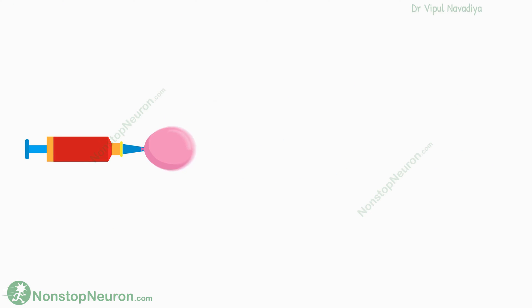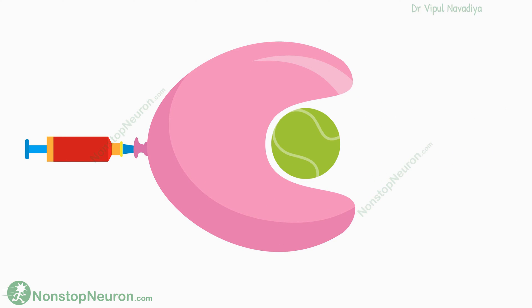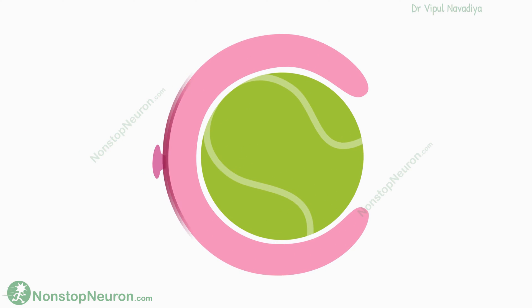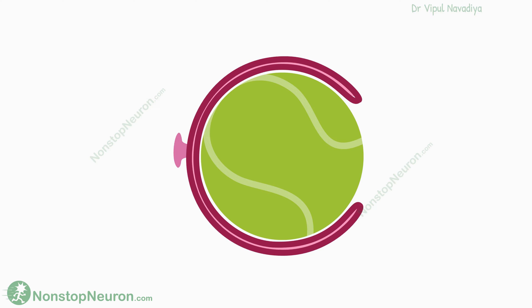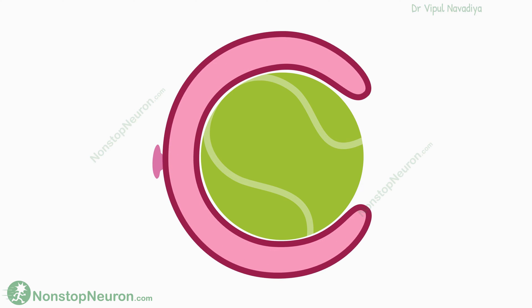Take a balloon and inflate it. Then take a ball and push it inside the balloon like this. Then let the air flow out of the balloon. Now the ball will be covered by two layers of balloon rubber, and there would be a space in between the two. Grossly speaking, both the layers would be touching each other due to the tight rubber, so there won't be an actual space. But technically, there would still be a space with zero volume, and that space can be filled with air or anything.